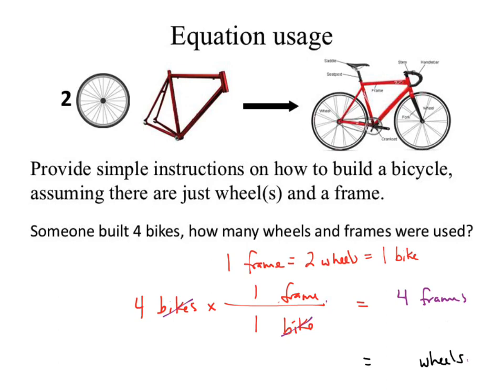You have to start with bikes again, or you could start with four frames since we know how many frames. You now have two places to start. All starting points should get you to the exact same answer. Let's see — same thing: 1 bike equals 2 wheels. The one and the two come from our chemical equation, which you decided to write out as equalities.